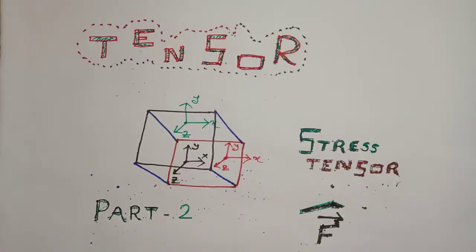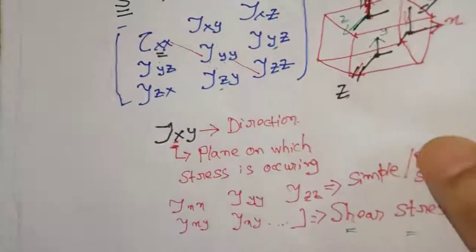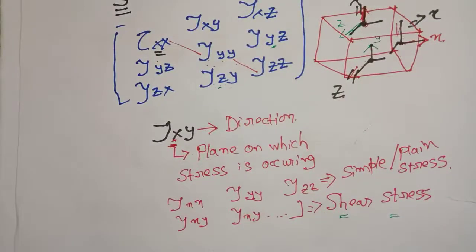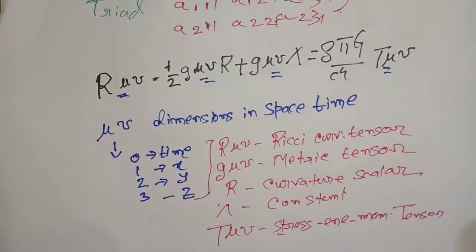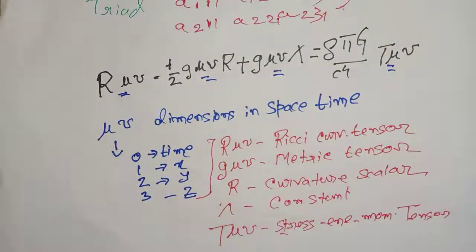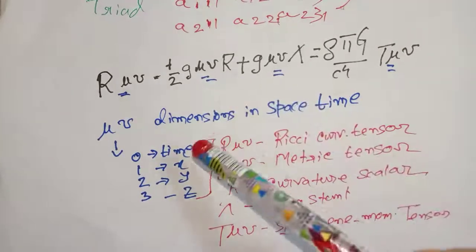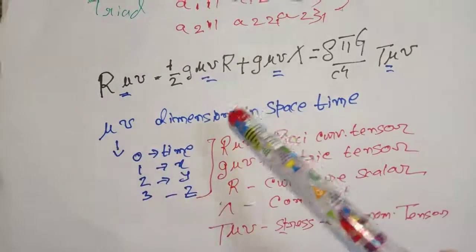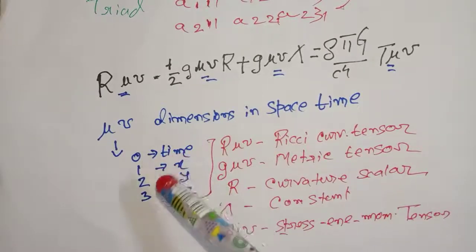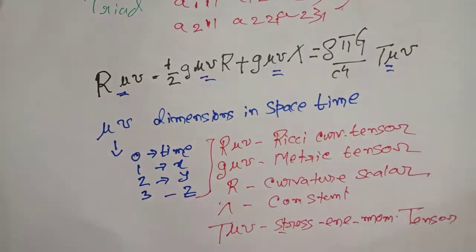This is tensor part 2, continuing from where we left off. We have covered how to understand the different subscripts and what they really mean, and we have also learned a little bit about Einstein's field equations and how the tensors in Einstein's field equation are represented. We listed all the tensors with indices mu and nu, where mu and nu take up the dimensions of space and time.